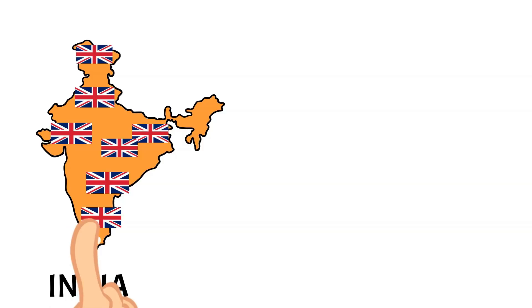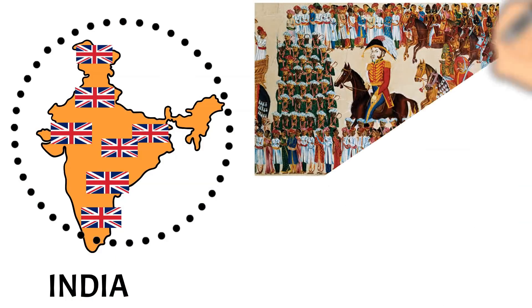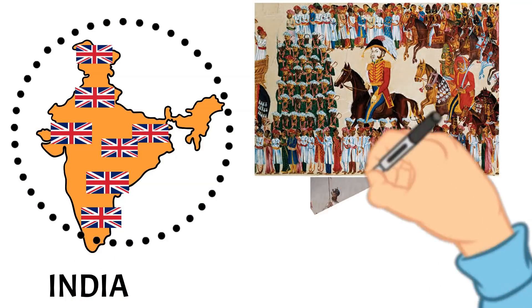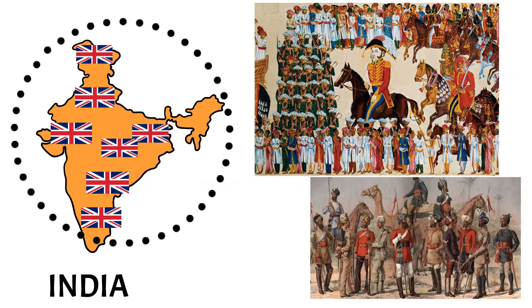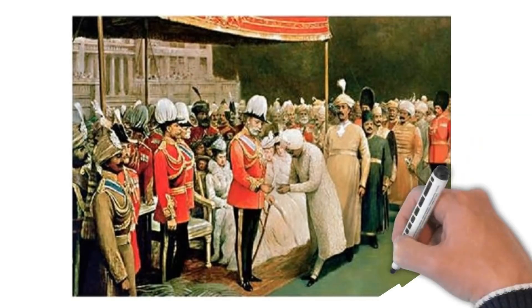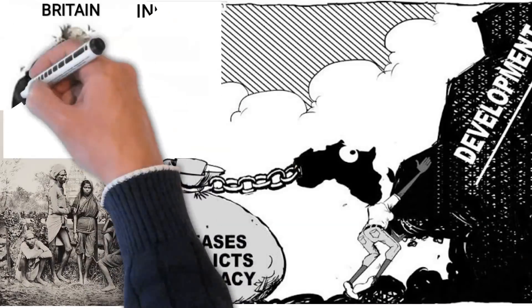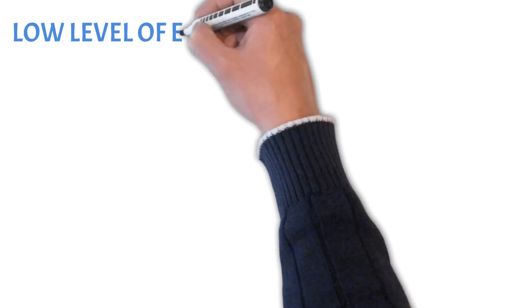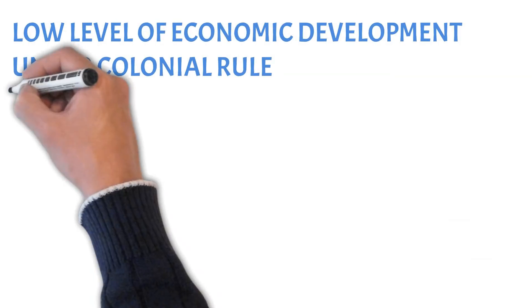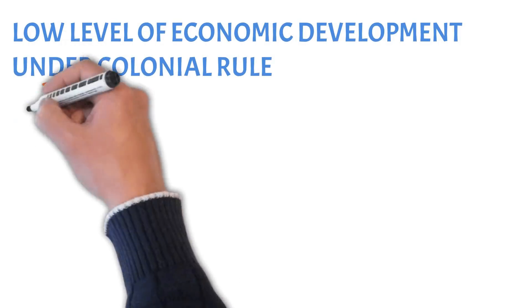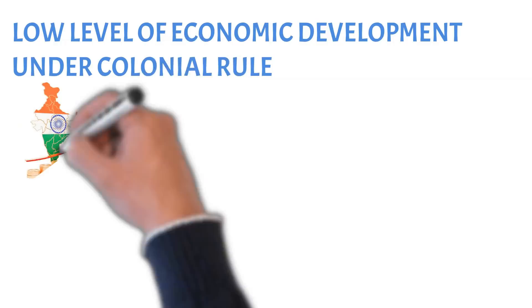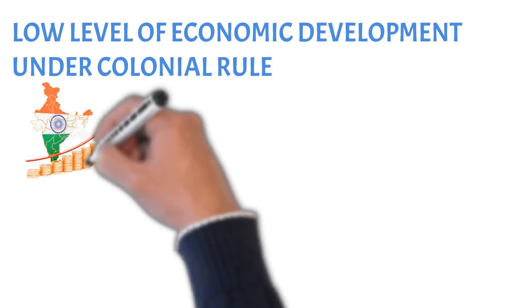The British had complete political control over India and along with that they also determined India's economic policies, which kept the Indian economy underdeveloped. Now, the next topic is low level of economic development under colonial rule — what was the state of India's economy before the British arrived?